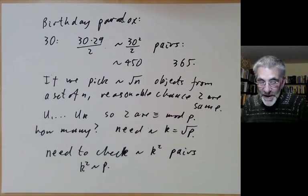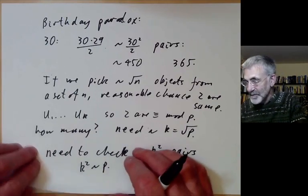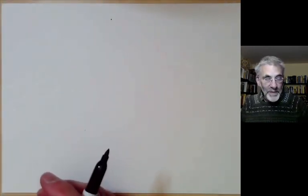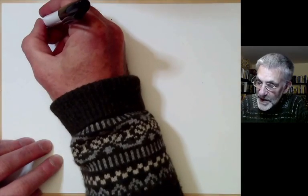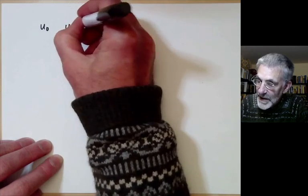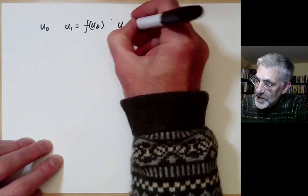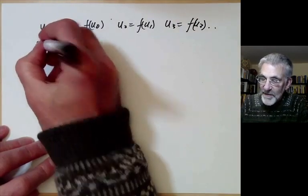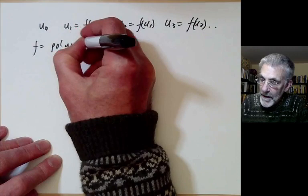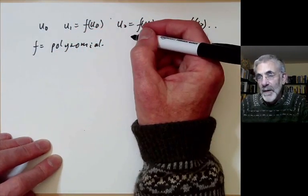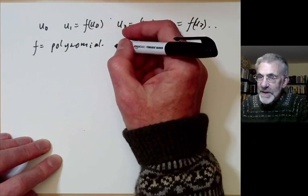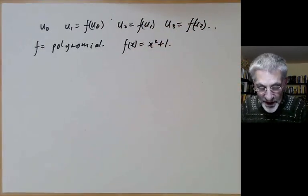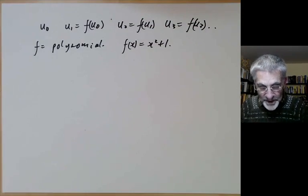But Pollard came up with this really ingenious method for vastly speeding it up. What you do is you select the numbers u1 to uk in a rather cunning way, which makes it much easier to check whether two of them are congruent. You pick some number u0, and then you pick u1 equals f of u0, and u2 equals f of u1, u3 equals f of u2, and so on, where f is some function, could be some polynomial. A reasonable choice is just f of x equals x squared plus 1. This seems to work reasonably well.